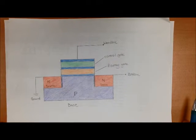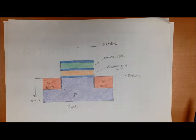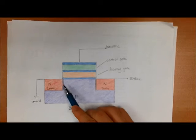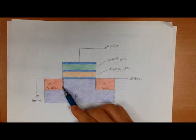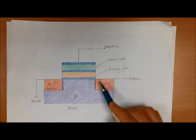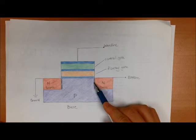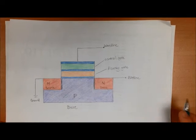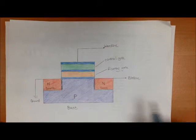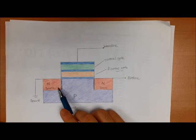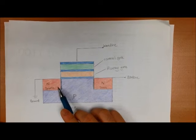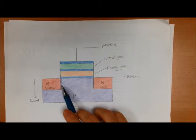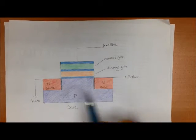Initially, no current is allowed to pass through the transistor because there is a depletion zone between the N-type and the P-type transistor. This is caused by the combination of electrons from the N-type and the holes from the P-type.